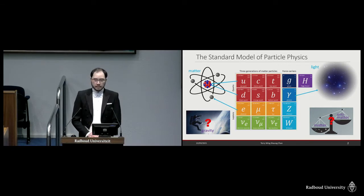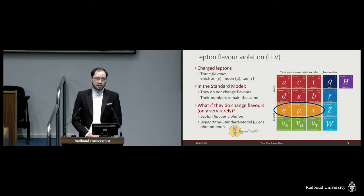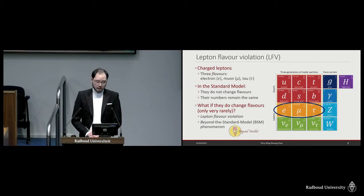And to improve our model in order to explain these phenomena, physicists are asking the question: where does the standard model start to fail and become inaccurate? Among other places, one of the places where the standard model could start to become inaccurate concerns a group of particles called the charged leptons. These leptons come in three different flavors known as the electron, the muon, and the tau lepton. In the standard model, these particles do not change flavors — in other words, the numbers always remain the same. But what if, contrary to the standard model, they do actually change flavors, but only very rarely? Then that would be lepton flavor violation, and this is a beyond the standard model phenomenon.